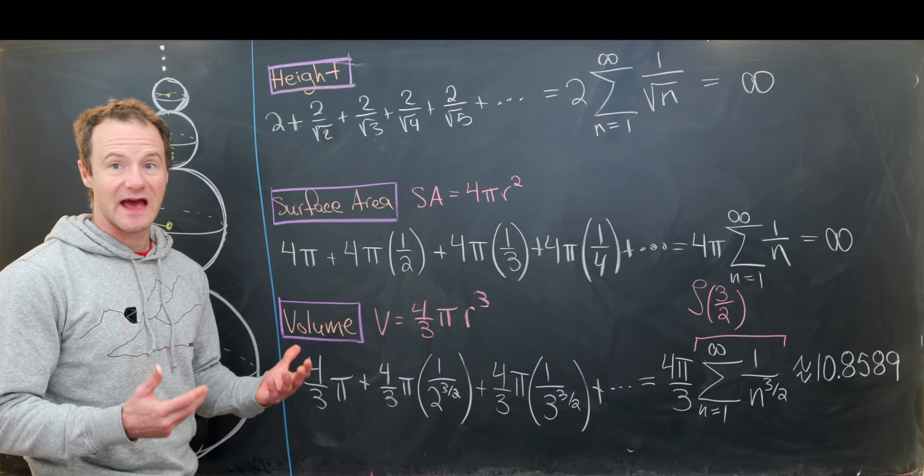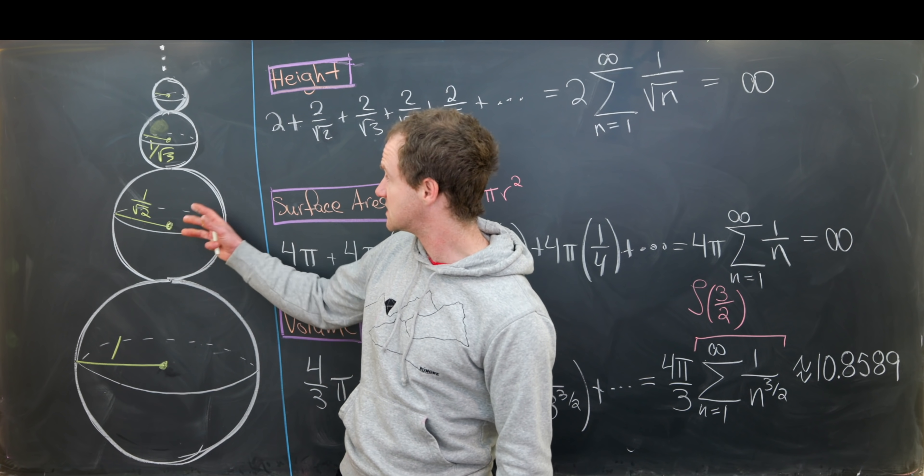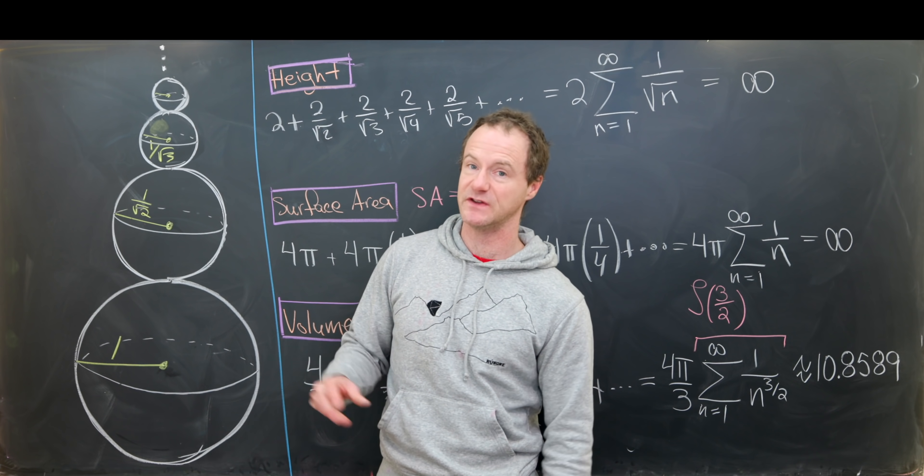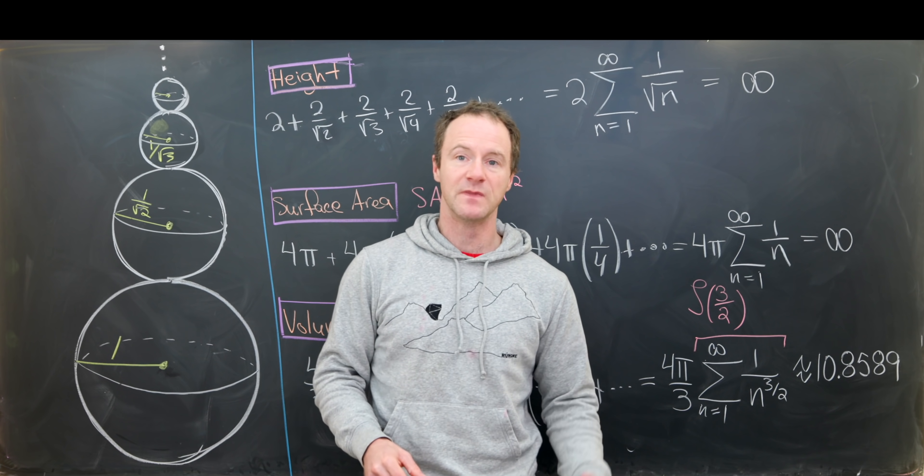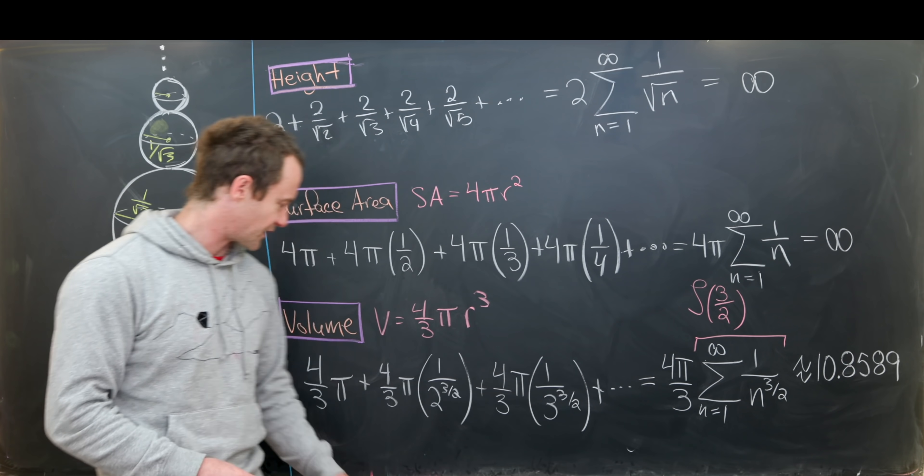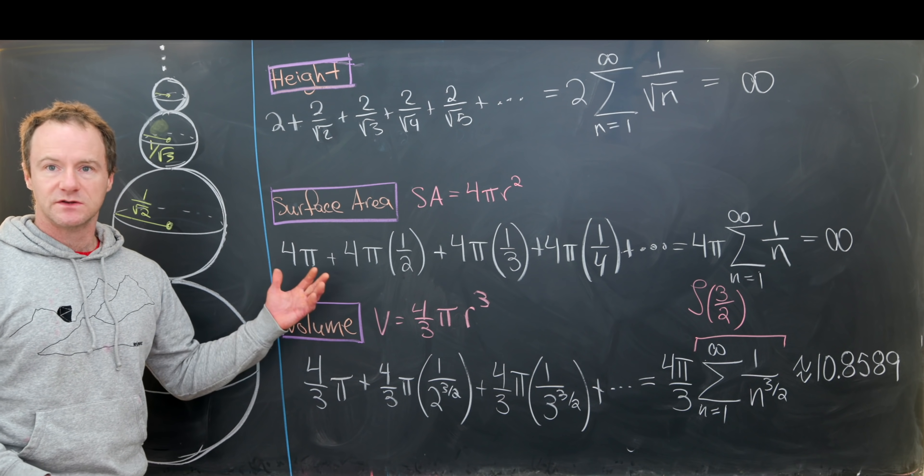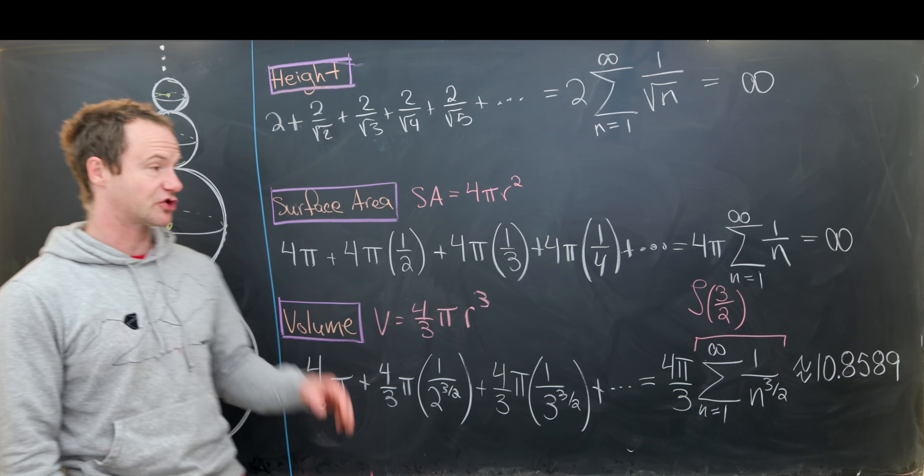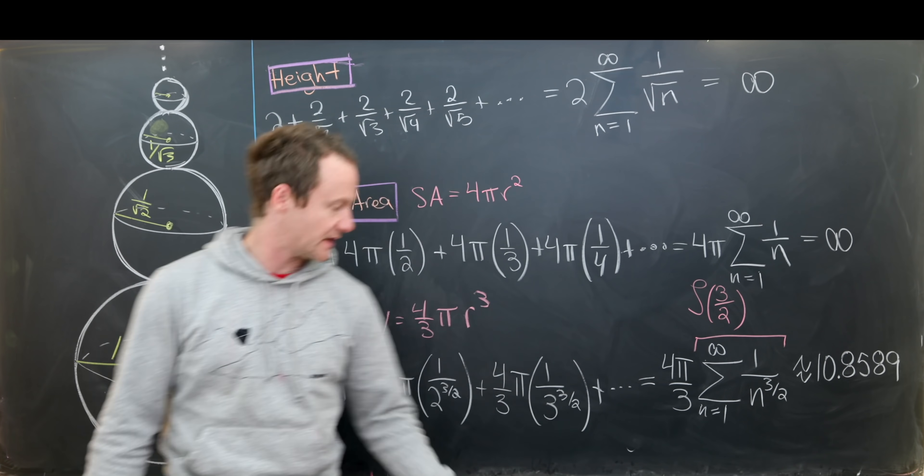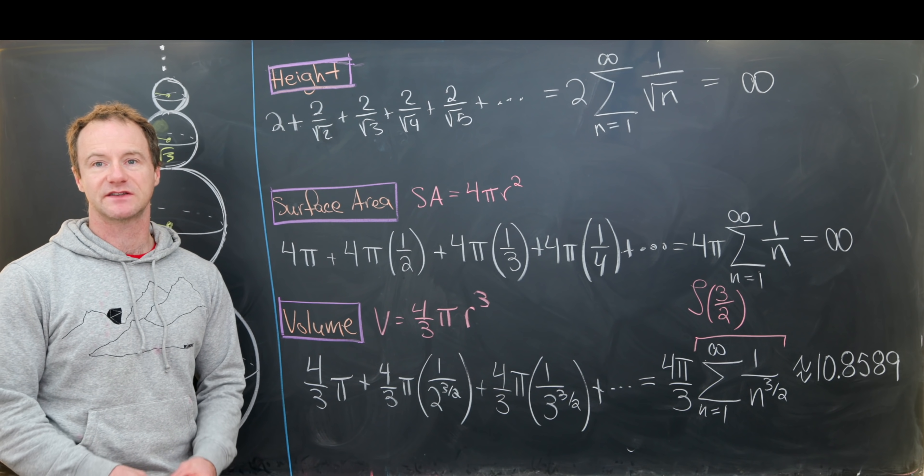So we got a finite value for the volume. So that means if we had clay, we could create all of these spheres and stack them on top of each other, if in fact, we could infinitely divide them. So that's maybe how we would interpret this as having a finite value for the volume. So let's conclude here. The height of the stack is infinite, the surface area of the stack is also infinite, but the volume of the stack is finite. And that's a good place to stop.